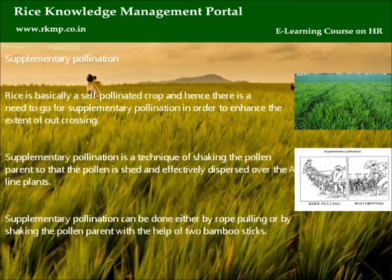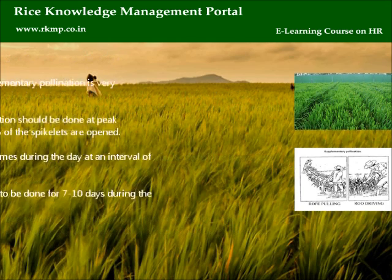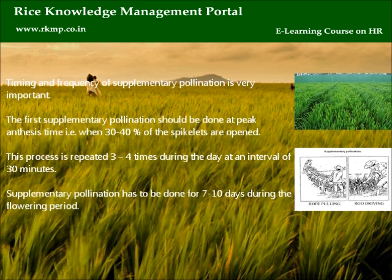Supplementary pollination: Rice is basically a self-pollinated crop, so supplementary pollination is needed to enhance the extent of outcrossing. Supplementary pollination involves shaking the pollen parent so that pollen is shed and effectively dispersed over the A-line plants. It can be done either by rope pulling or by shaking the pollen parent with two bamboo sticks. The first supplementary pollination should be done at peak anthesis time, i.e., when 30–40% of spikelets are opened, repeated 3–4 times during the day at 30-minute intervals. This process is continued for 7–10 days during the flowering period.